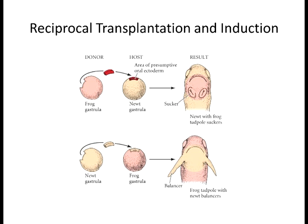Many of the morphogen gradients we'll discuss today are almost universal—we and other vertebrates, even some invertebrates, use some of the same proteins to pattern the brain, the ectoderm, and so on. The difference is the genetic capacity of those tissues to respond.